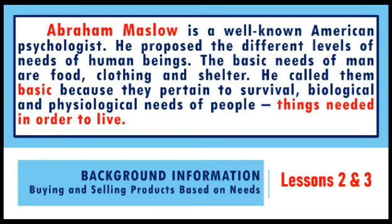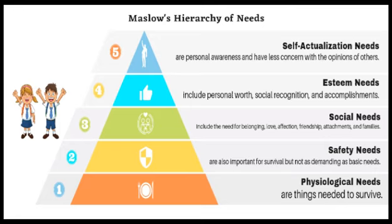According to Abraham Maslow, there are five levels of needs. Physiological needs, or basic needs, are things needed to survive, such as food, water, air, sleep, clothing, and shelter. Security needs, or safety needs, are also important for survival, but not as demanding as basic needs.